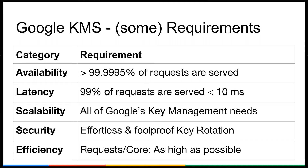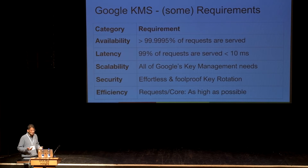On the latency side, at the 99th percentile, request latency needs to be less than 10 milliseconds. For comparison, human perception is somewhere in the order of 100 milliseconds, and a user-level operation may translate into multiple operations at the KMS level, so you need to budget for that. On scalability, we need to meet all of Google's needs.